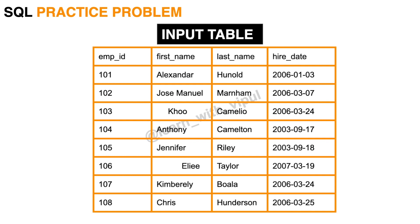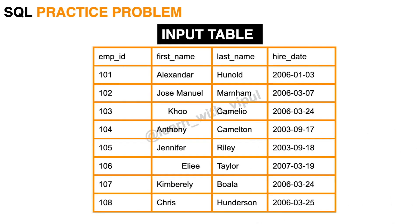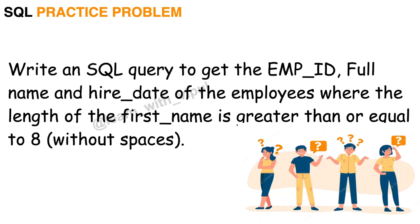The practice problem involves an input table with four columns: employee ID, first name, last name, and hire date. We are asked to write an SQL query to print three columns: employee ID, full name, and hire date. The challenge is that full name must be derived from first name and last name, and we must only include records where the length of the first name is greater than or equal to 8, excluding spaces.